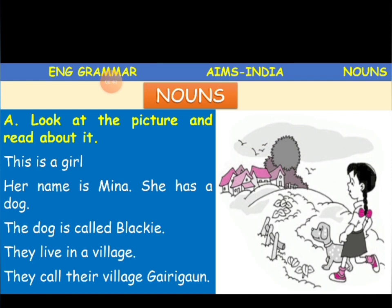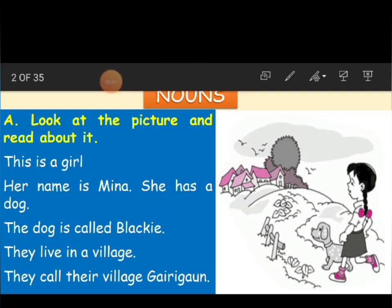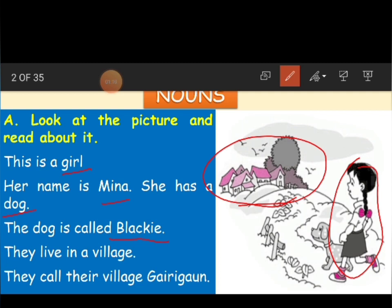So we are talking about this picture. The girl's name is Meena. She is having a dog called Blackie. They live in a village, and they call their village Garigao. Here the dog is an animal. So we are talking about a person, we are talking about an animal, we are talking about a place.